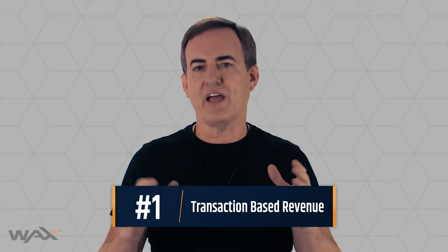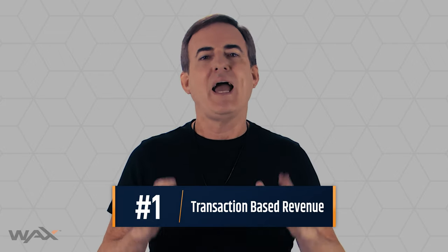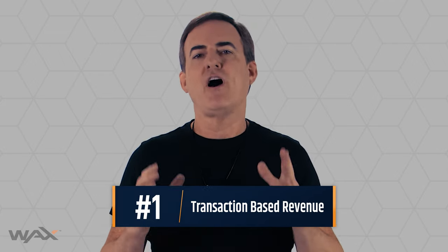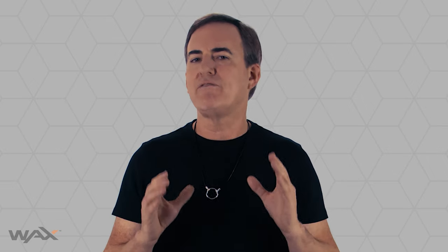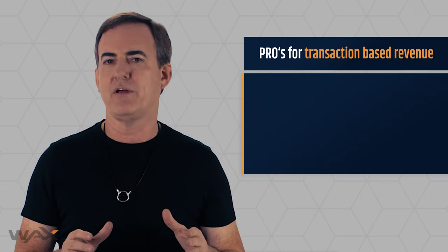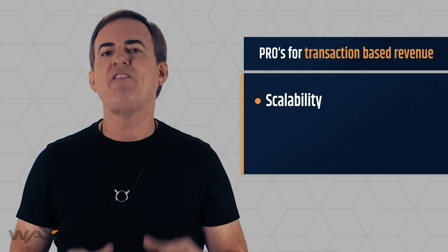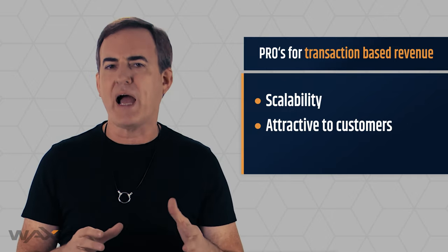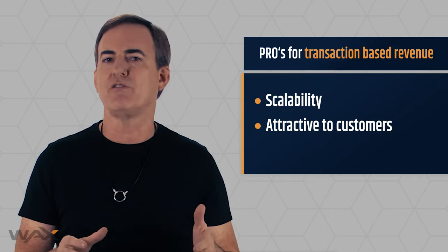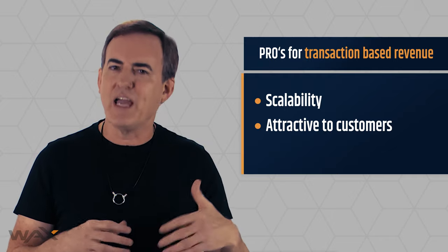And finally, the best revenue model on earth: transaction-based revenue — the gold standard. Google, payment companies like PayPal — these are transaction-based revenue models. They are highly valued because they have two appealing properties: they scale in line with usage on demand, and they are often perceived as more attractive to customers because customers like the pay-as-you-go model.